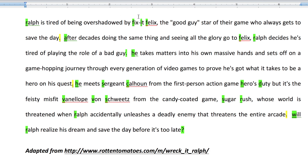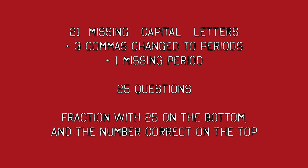These are the corrections you should have. Look for the green letters — those are the ones you need to have on your sheet. And let's grade it up. Contestants playing at home, remember, there are 21 missing capital letters in today's exercise. Three commas were also changed into periods, and there was one missing period at the end of a sentence, which gives you 25 questions in all. At the top of your paper, please write a fraction — put 25 on the bottom for 25 questions, and the number you got correct on the top. And, as always, thanks for playing Cap'n Punk.